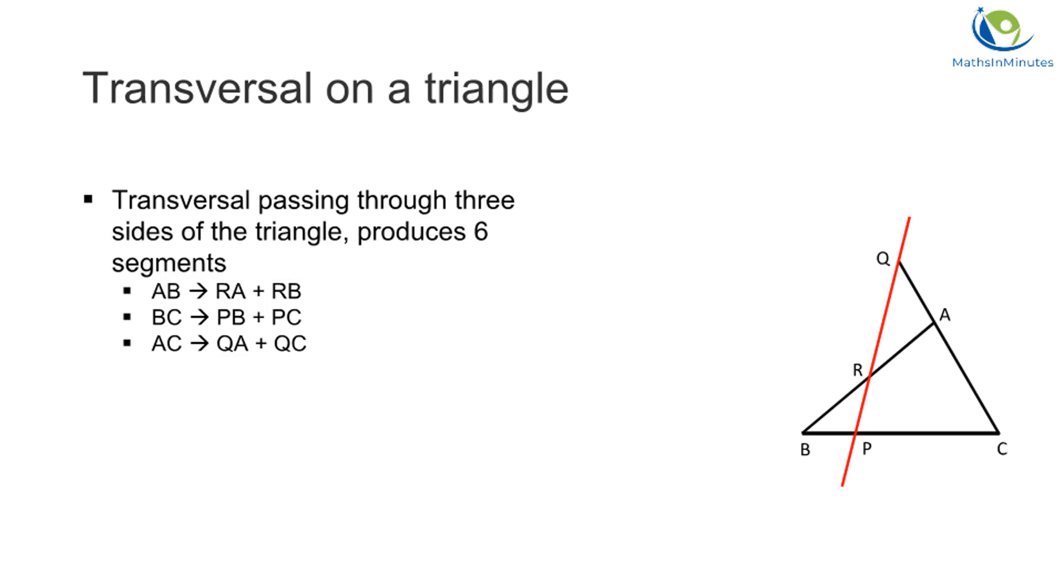As shown here, point Q is on the extended line of side CA. By connecting the intersection point to both endpoints of the side, six segments are created, which are: